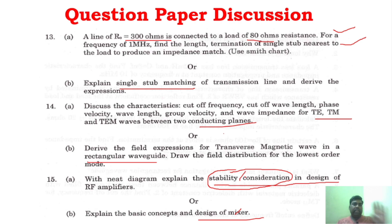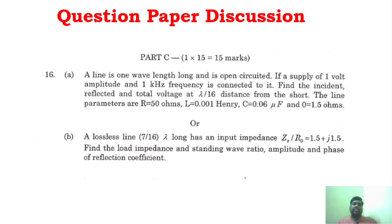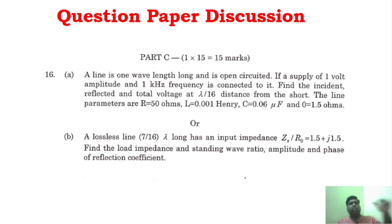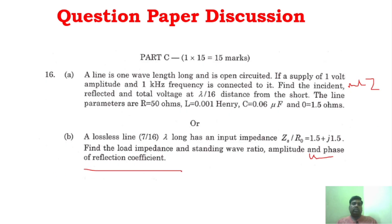Unit 5 has one question in the exam. In Part C, you can see Unit 5 is significant in this particular subject. In the first four units, maximum 90% of questions are problems. If you study these questions you will be in a safer side, because in Part C there are 85% problems. This is Unit 2 problem and this is Unit 3 problem.